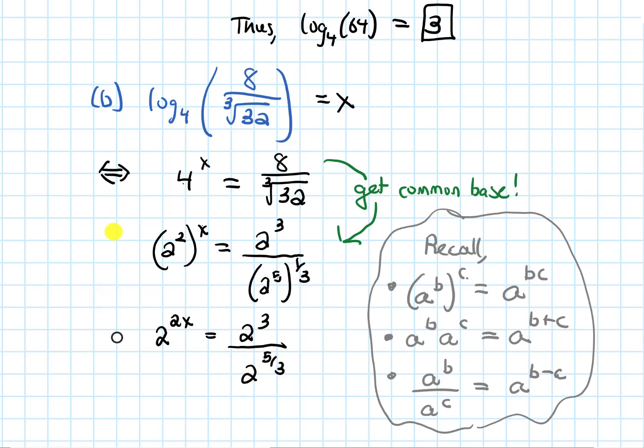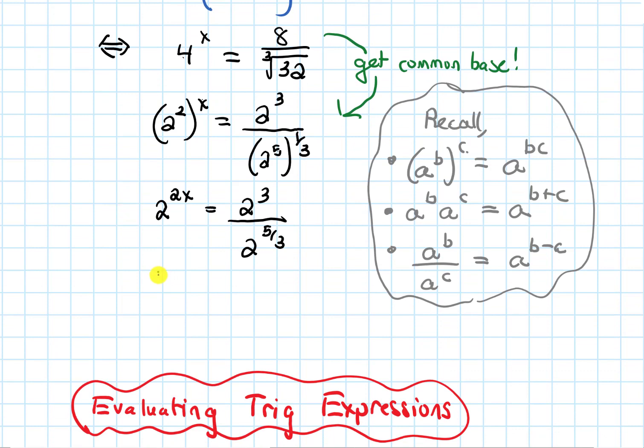Now I can further simplify this. We have 2 to the 2x on the left. And on the right, I'm going to subtract the powers. I'll get 2 to the 3 minus 5 thirds. So we have 2 to the 2x on the left, and this is going to be equal to 2 to the 3 minus 5 thirds. That's going to be 4 thirds.